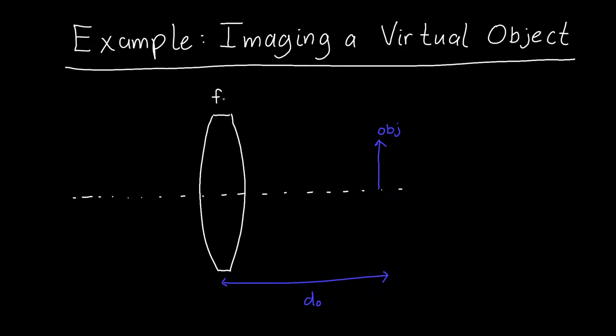To set this up, let's say that our lens has a focal length of 10 centimeters and our object is at a distance of negative 5 centimeters. Remember, any object that is to the right of the lens is called a virtual object and the distances are taken to be negative. In this problem we want to find the location of the image.